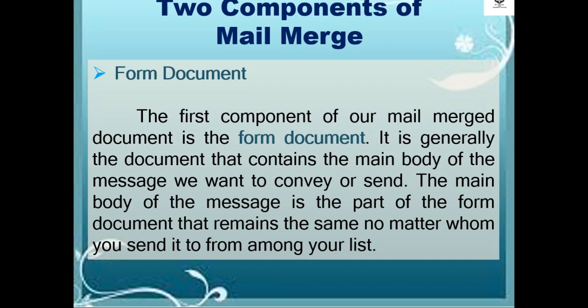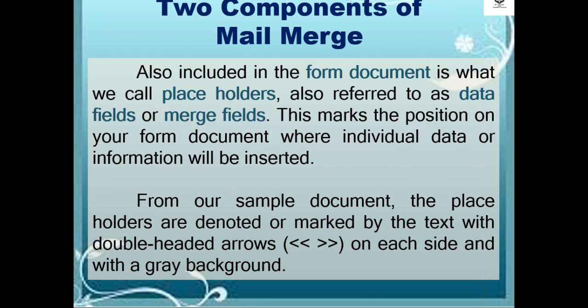The first component of our Mail Merge document is the form document. It is generally the document that contains the main body of the message we want to convey or send. The main body of the message is the part of the form document that remains the same, no matter whom you send it to. Also included in the form document is what we call placeholders, also referred to as data fields or merge fields. This marks the position on your form document where individual data or information will be inserted. The placeholders are denoted by text with double-headed arrows on each side and a gray background.